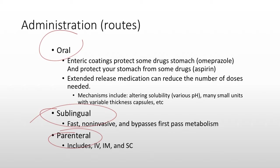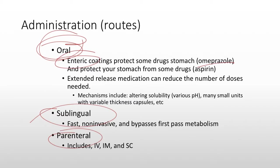With each of these routes of delivery, there are different things you have to be aware of. For example, if you take something orally, you have a very high acid content in your stomach, and it can destroy many different kinds of drugs. For example, omeprazole is destroyed by stomach acid, and so it's covered by an enteric coating. If you have a pill that has a coating on the outside, then it is very likely that coating is protecting it from your stomach acid. In those kinds of situations, you do not want to cut the pill in half, break it open, or anything like that, or else it's going to be destroyed and you're not going to have any effect from the medication.